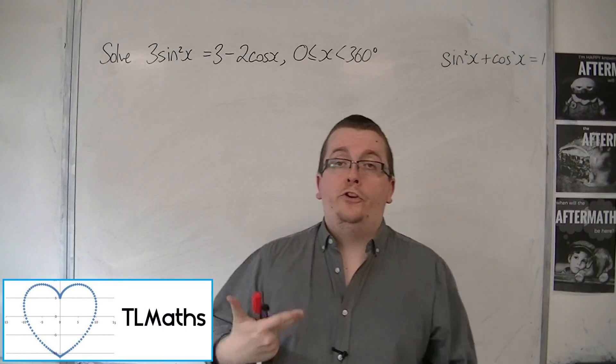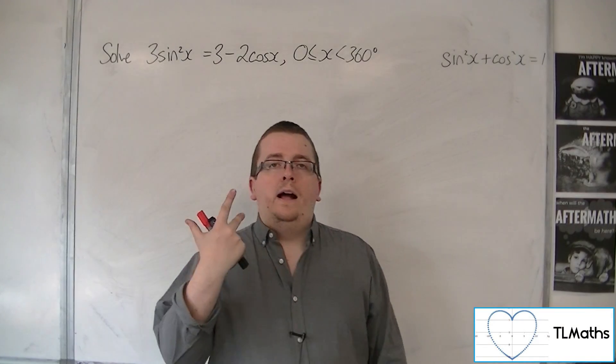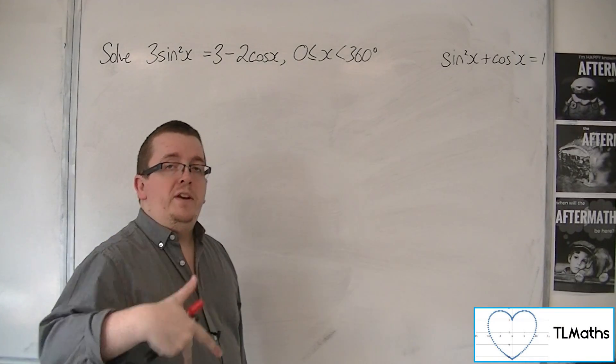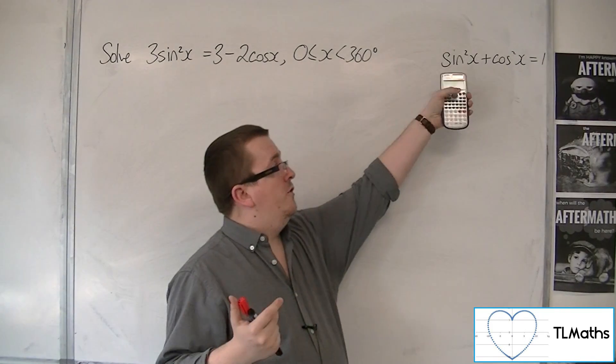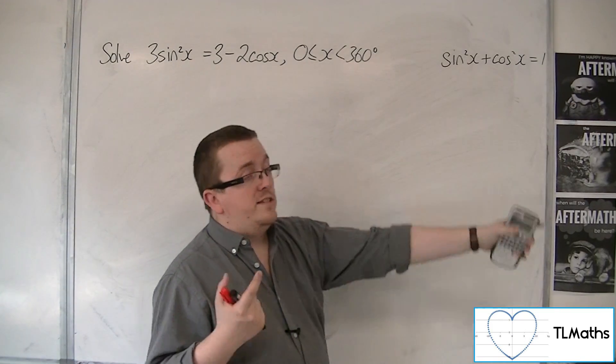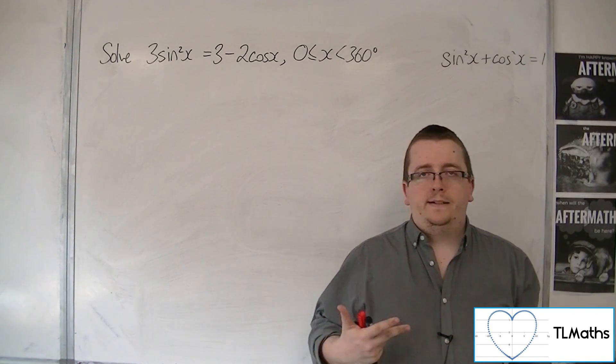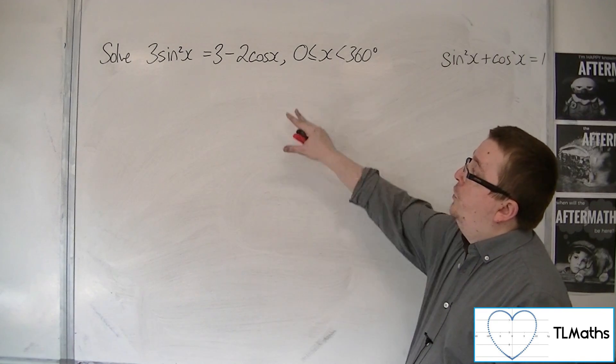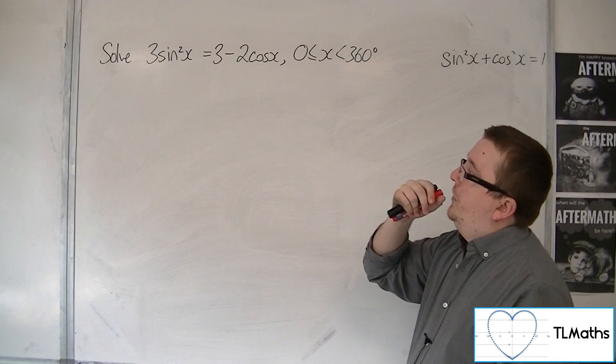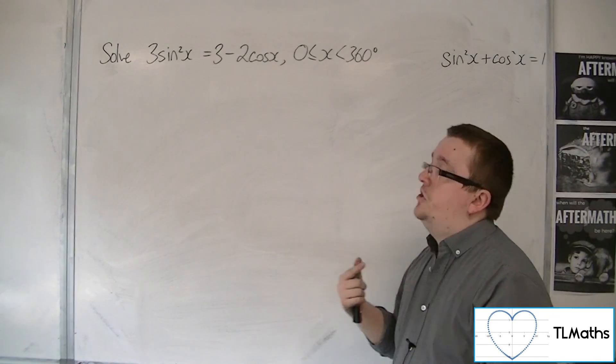So now that we have two trigonometric identities ready, namely sine x over cos x is tan x, but more importantly at the moment for us to practice is using this sine squared plus cos squared equals 1. How are we going to use that fact? Well, it comes in to solving equations that look like this. So in this case, we've got 3 sine squared x equals 3 minus 2 cos x.